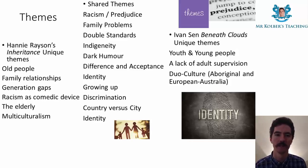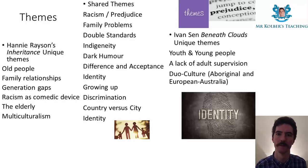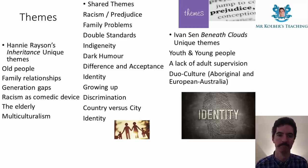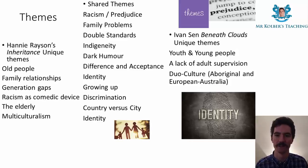Both films feature double standards. In Inheritance, Nugget is part of the family until it comes to the inheritance — then all of a sudden he's not. In Beneath Clouds, Lena is accepted into the pub and offered lifts by people, whereas Vaughan is not, despite them sharing a common identity.